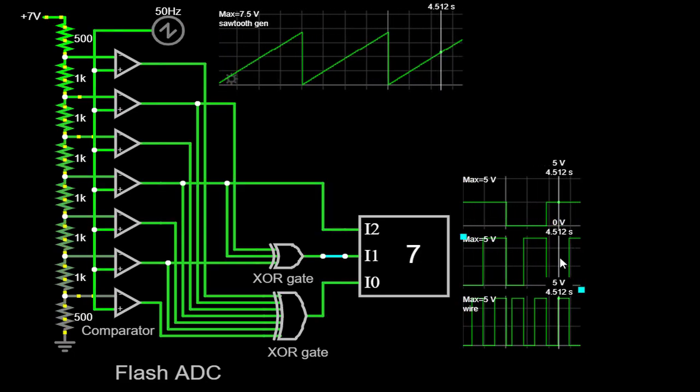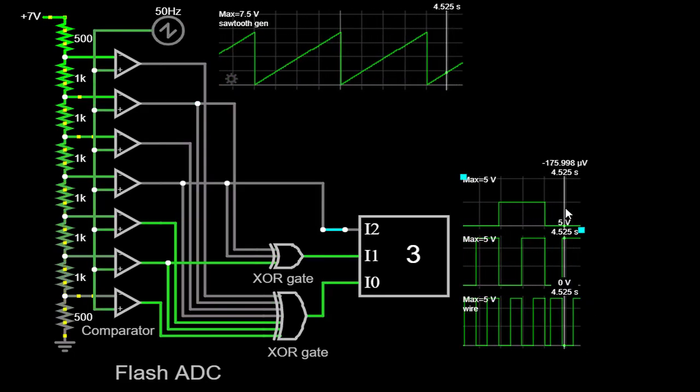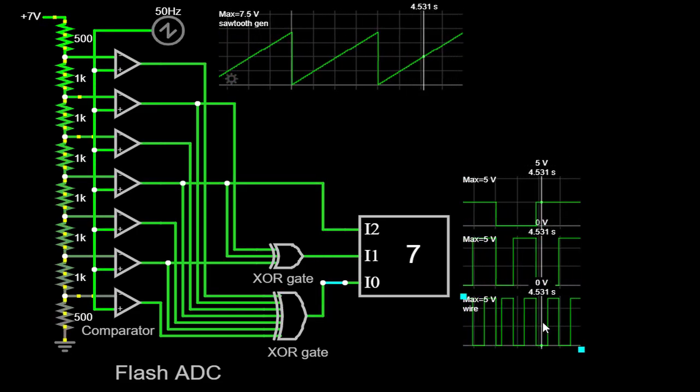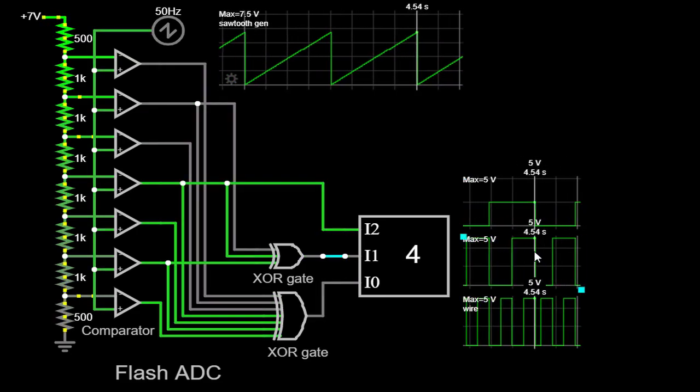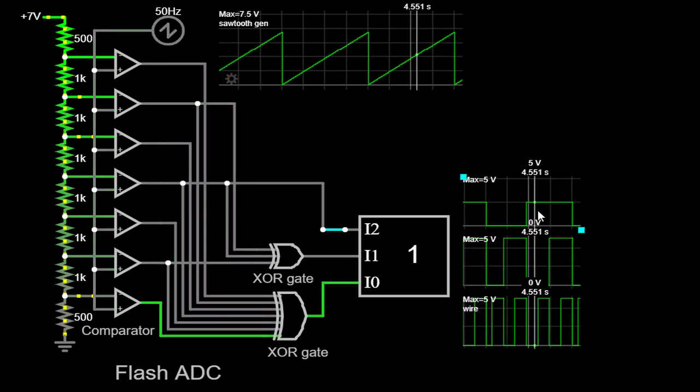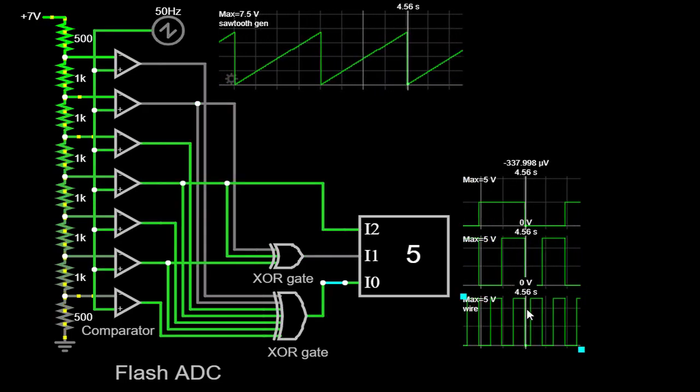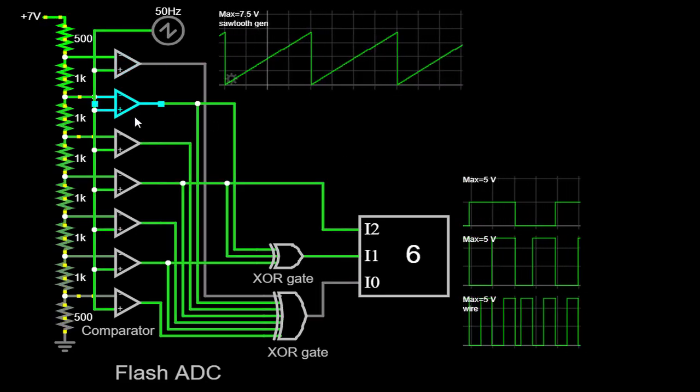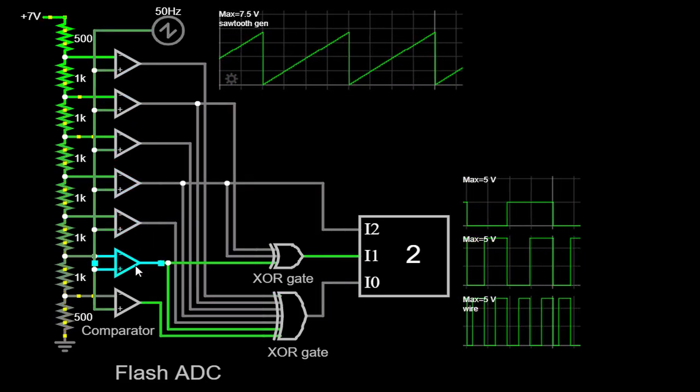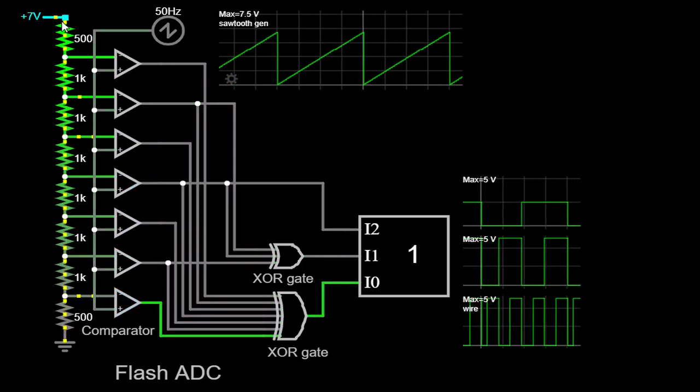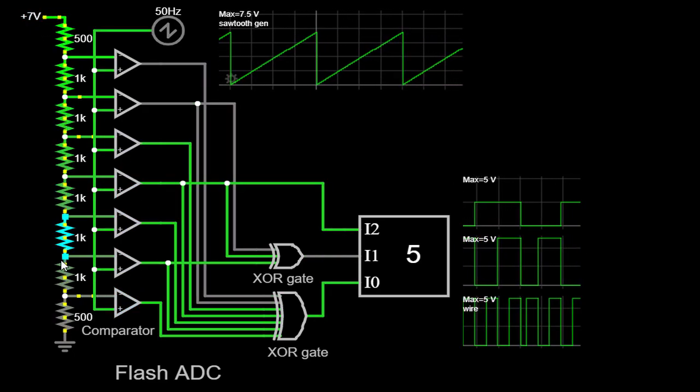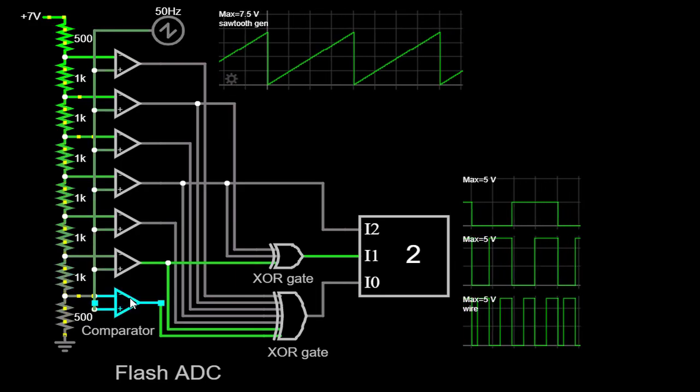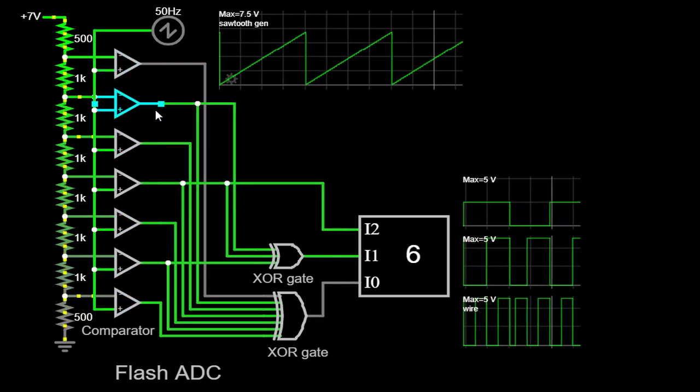Now, let's proceed with running the simulator and observe the Flash ADC in action. As the sawtooth waveform is applied as the input signal, the comparators within the ADC start their work. Each comparator compares the instantaneous voltage of the sawtooth waveform with a distinct reference voltage. When the input voltage exceeds the reference voltage, the comparator outputs a 1, otherwise, it outputs a 0.